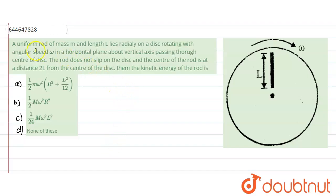Hello everyone, let us start with our question. In this question, what is given? A uniform rod of mass m and length l lies radially on a disc rotating with angular velocity omega in a horizontal plane about vertical axis passing through the center of the disc. So this is about this axis it is rotating with an angular velocity omega about the center. Now the rod does not slip on the disc and the center of the rod is at a distance 2l from the center of the disc.